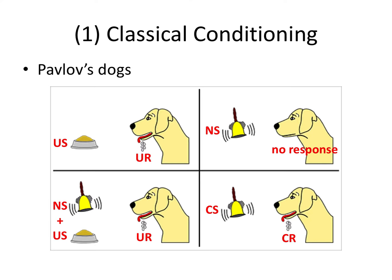An example in dentistry: the dentist gives injections, which are the unconditioned stimulus, that are painful and cause anxiety — the unconditioned reaction. The neutral stimulus, like the bell, would be the presence of a dentist wearing a white coat to give the injection. Once this is repeated multiple times, the mere presence of the dentist, particularly in a white coat, will cause anxiety for the patient — known as white coat syndrome.